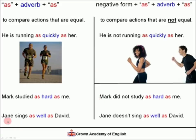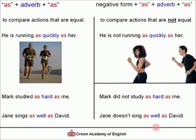In this example, 'Jane sings' is in the present simple. In the negative it becomes: Jane doesn't sing as well as David. This means that David is a better singer — David sings better than Jane.